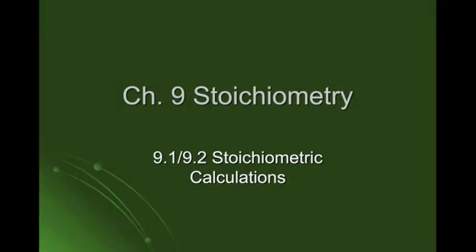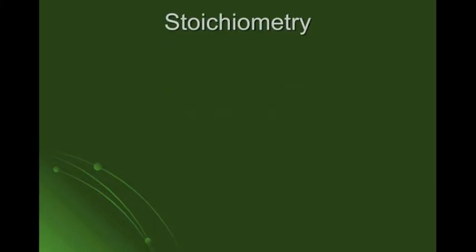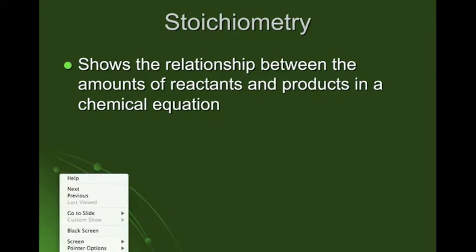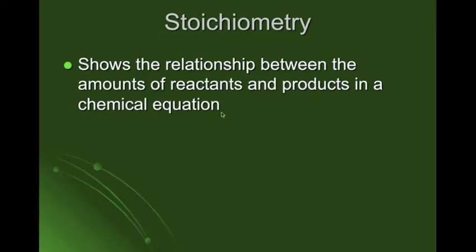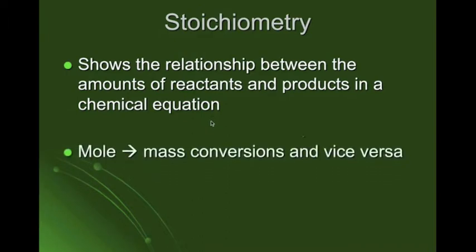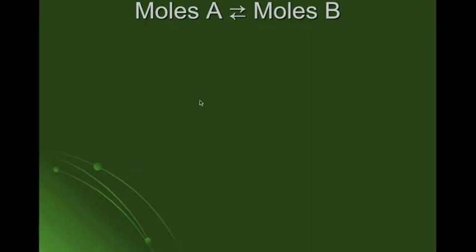We're going to start notes on stoichiometry — sections 9.1 and 9.2 in our book. Stoichiometry shows the relationship between the amounts of reactants and products in a chemical equation. Stoichiometry gives us ratios and the ability to calculate between different parts of a chemical reaction. For instance, we can do moles-to-mass conversions and mass-to-mole conversions.